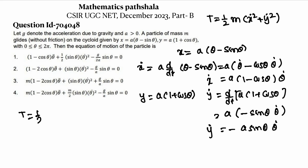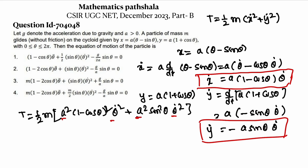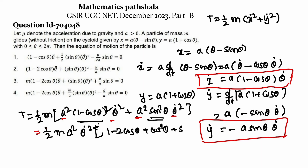The kinetic energy T = ½m(ẋ² + ẏ²). Substituting: ẋ² = a²(1 - cosθ)²θ̇² and ẏ² = a²sin²θ · θ̇². Taking a²θ̇² common, we get ½ma²θ̇²[(1 - cosθ)² + sin²θ] = ½ma²θ̇²[1 - 2cosθ + cos²θ + sin²θ]. Since cos²θ + sin²θ = 1, this becomes ½ma²θ̇²(2 - 2cosθ).